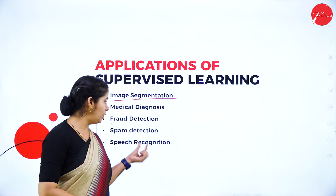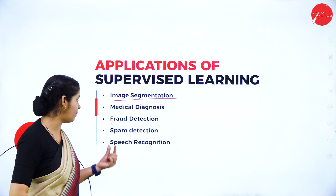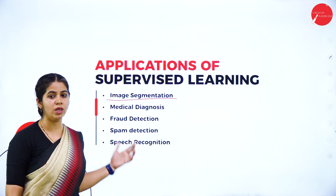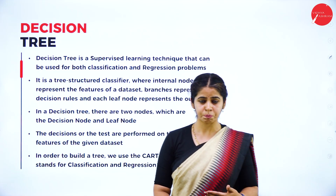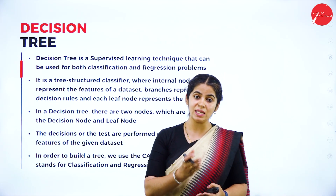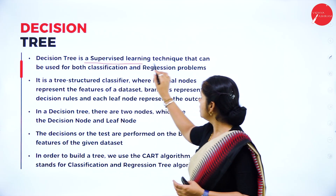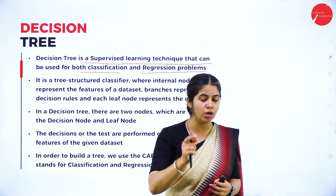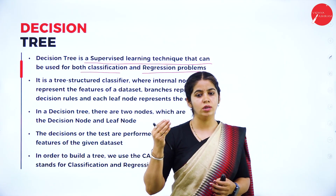Speech recognition is also one of the main applications where we can use supervised machine learning. Next, we have Decision Tree. We can achieve classification as well as regression using the decision tree algorithm. A decision tree is a supervised learning technique that can be used for both classification and regression problems, but it mainly focuses on classification.